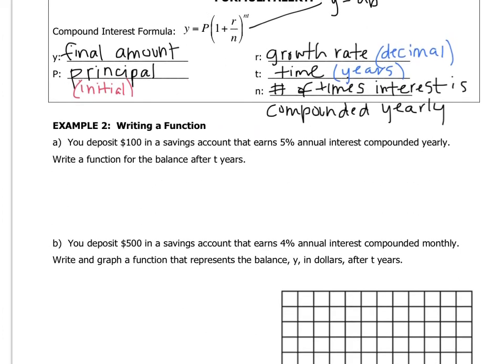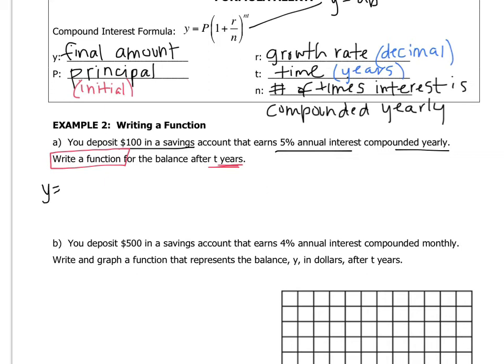So letter A, example 2, you deposit $100 in a savings account that gets 5% annual interest compounded yearly. And all we have to do is write a function. We don't have to evaluate anything because we actually don't know how many years the money's been in this account. So we can't calculate how much money is in there. The only thing we can do is plug the values in and write a function. So Y equals, and now we just plug in my values. The principal is 100, 1 plus, the rate is 0.05, and the number of times it's compounded yearly. Well, if it says it's compounded yearly, then that means it's compounded once every year.